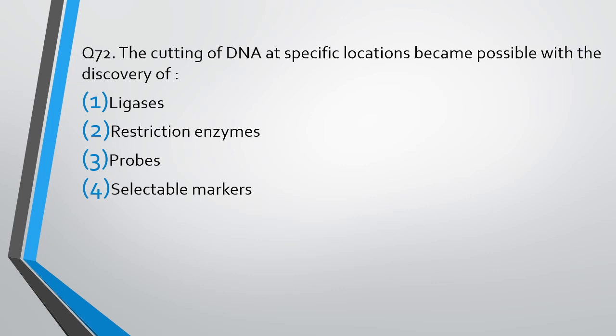Question number 72. The cutting of DNA at specific locations became possible with the discovery of: ligases, restriction enzymes, probes, or selectable markers. We are talking about the cutting of DNA — the correct answer is option 2, restriction enzymes.